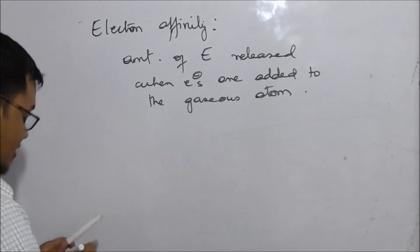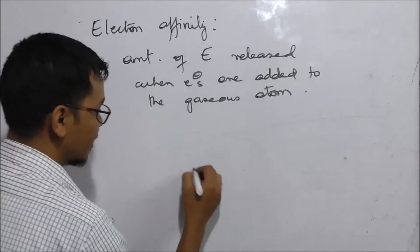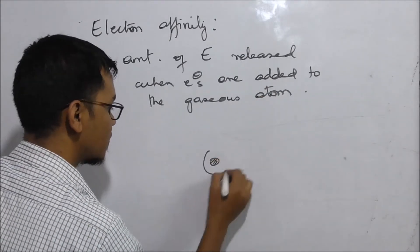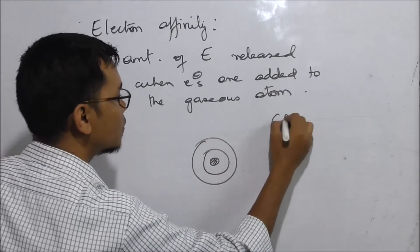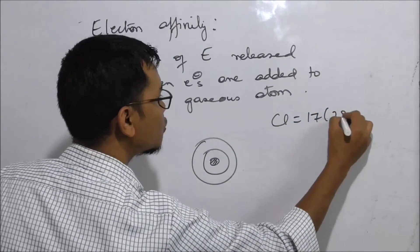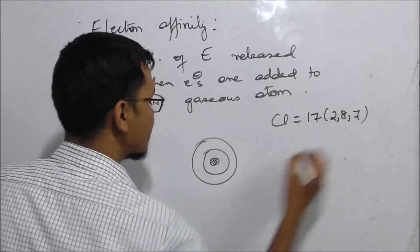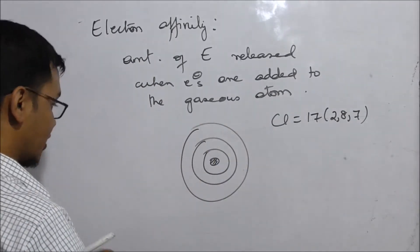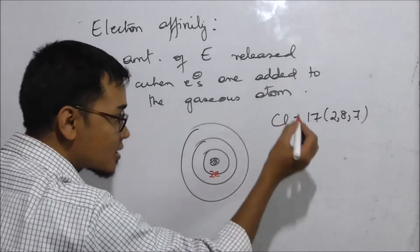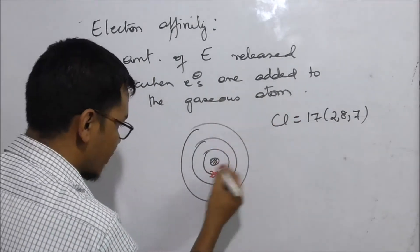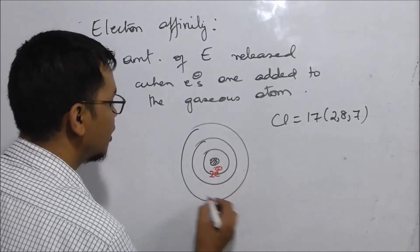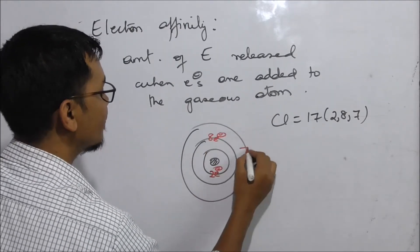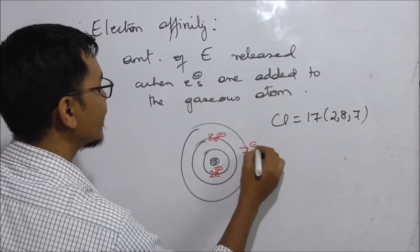This is the example of chlorine. Chlorine is atomic number 17, with electron configuration 2, 8, and 7. The first shell has 2 electrons, the second shell has 8 electrons, and the third shell has 7 electrons.